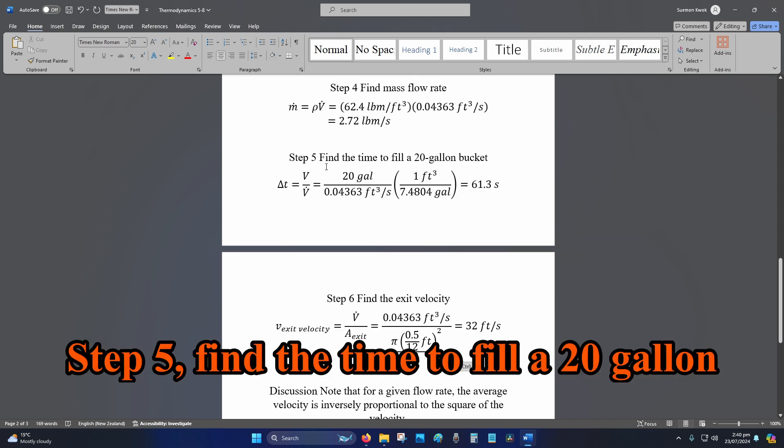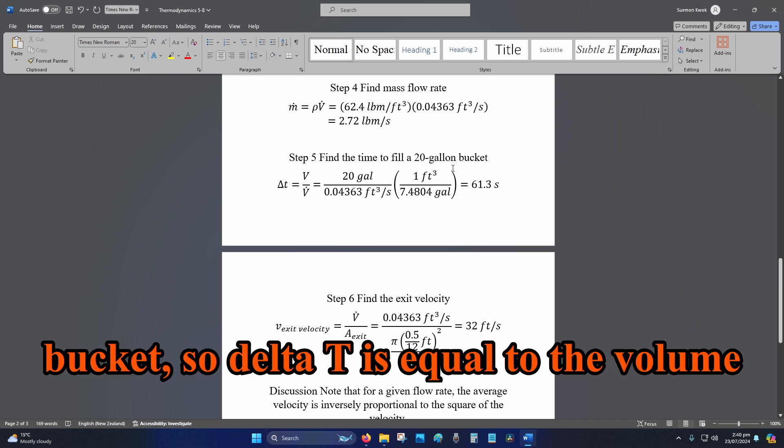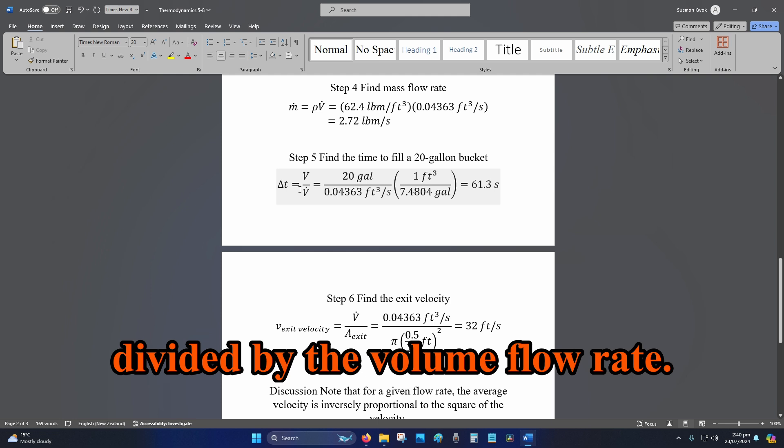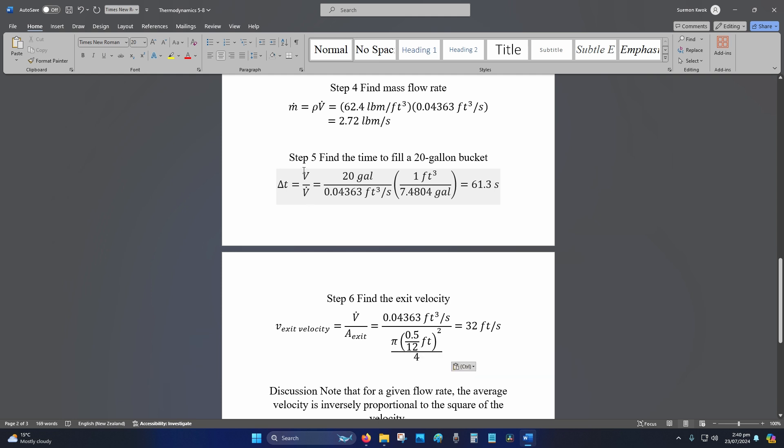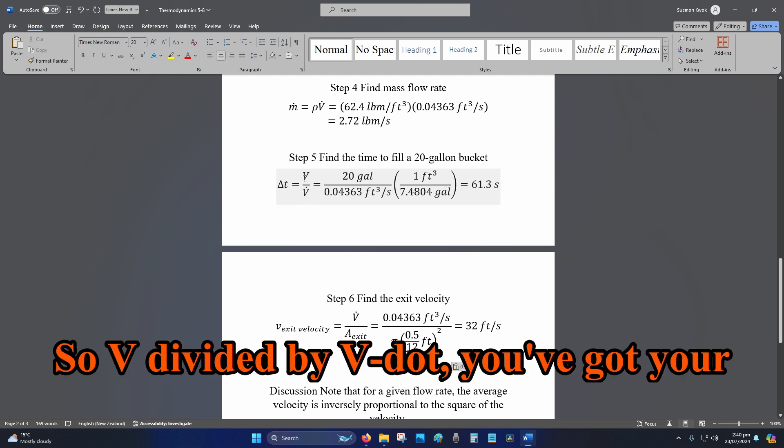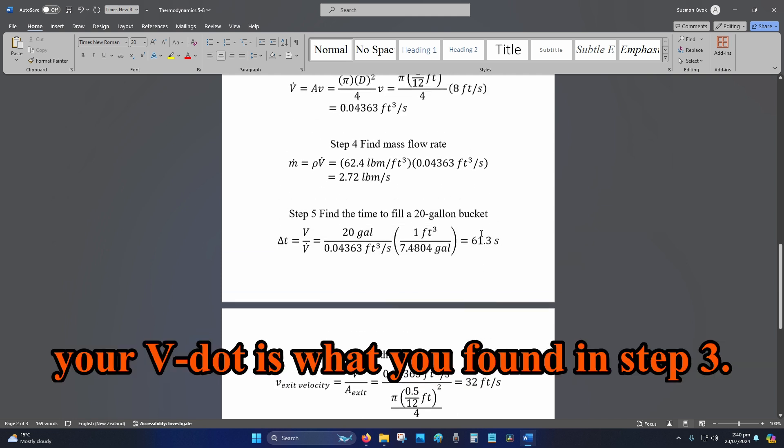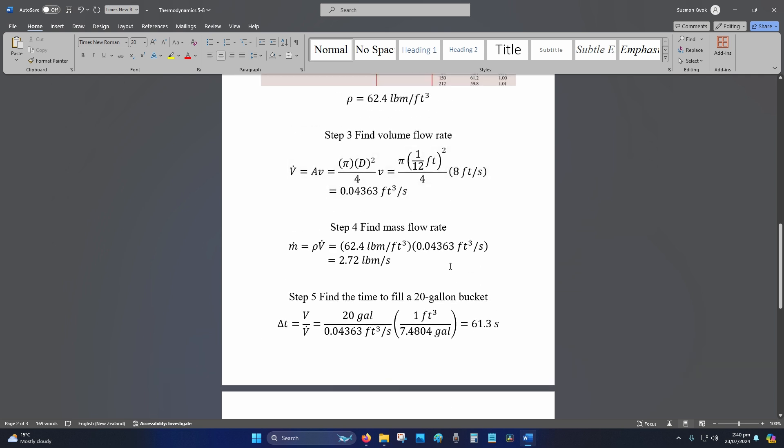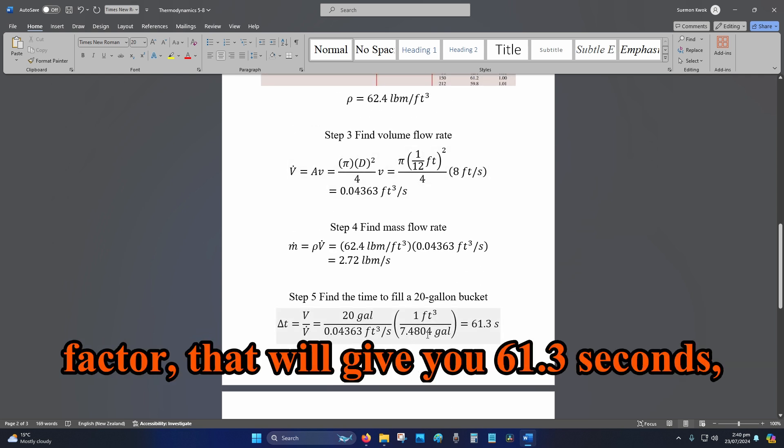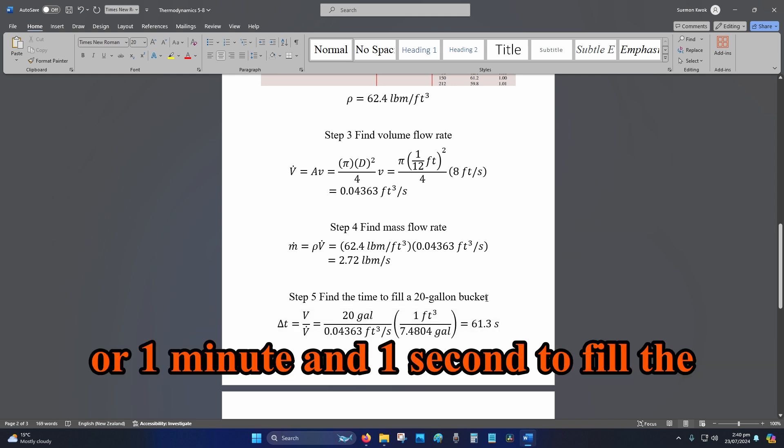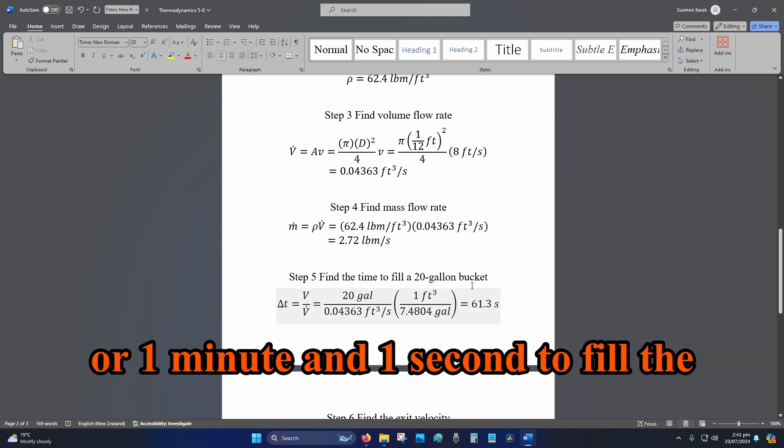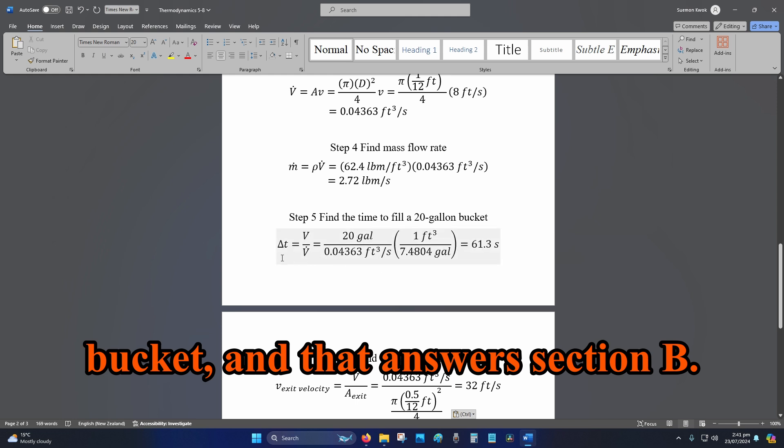Step 5, find the time to fill a 20 gallon bucket. So delta T is equal to the volume divided by the volume flow rate, so V divided by V dot. You've got your 20 gallon, that's given in the question. Your V dot is what you found in step 3. You also multiply by the conversion factor. That will give you 61.3 seconds, or 1 minute and 1 second to fill the bucket. And that answers section B.